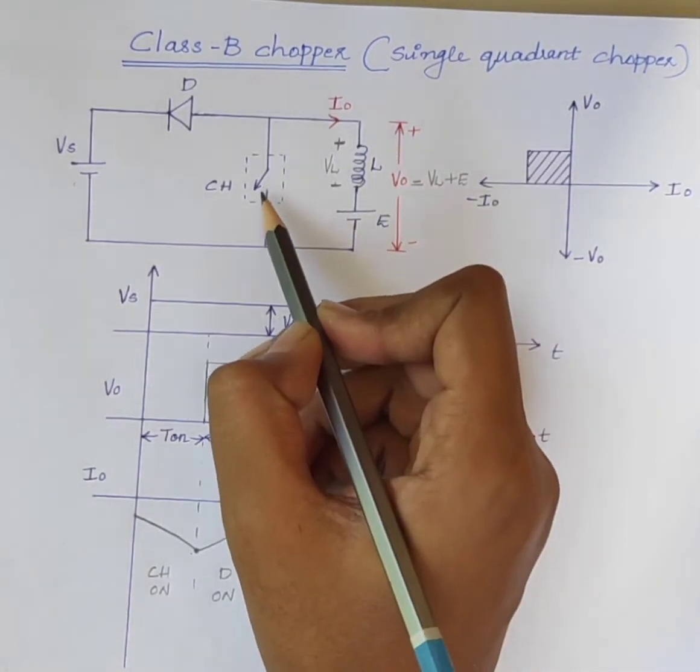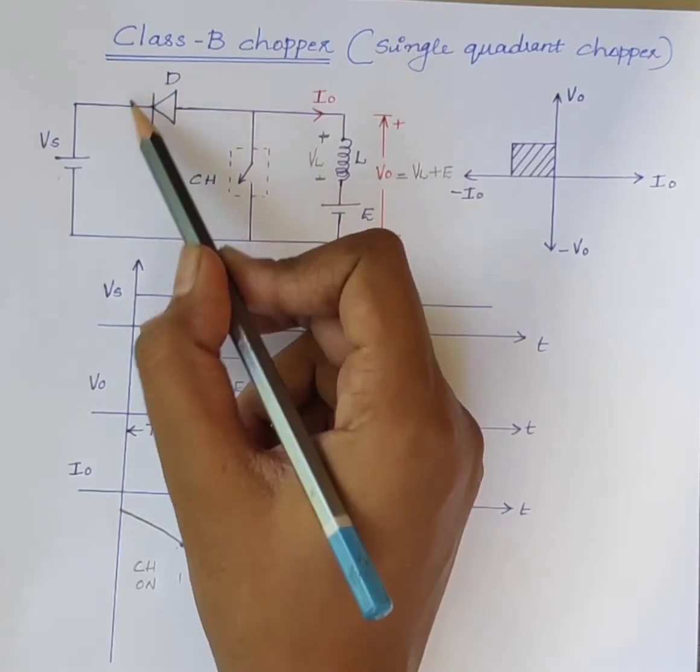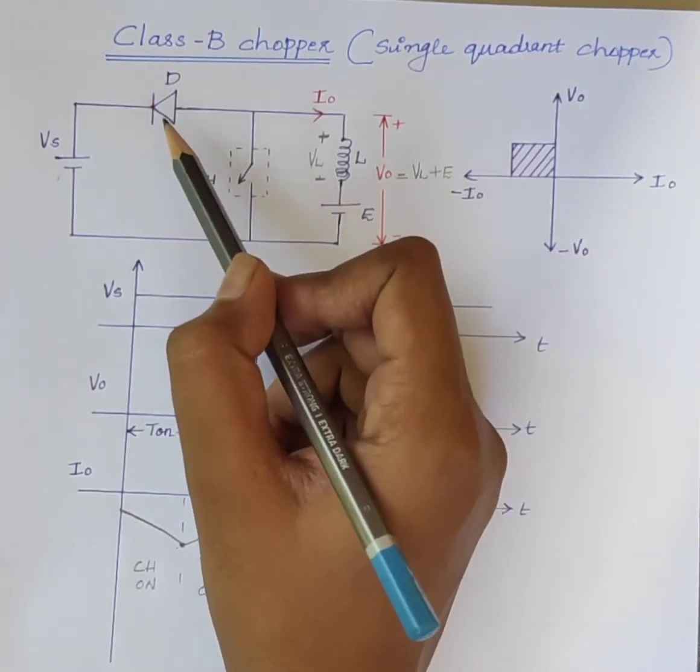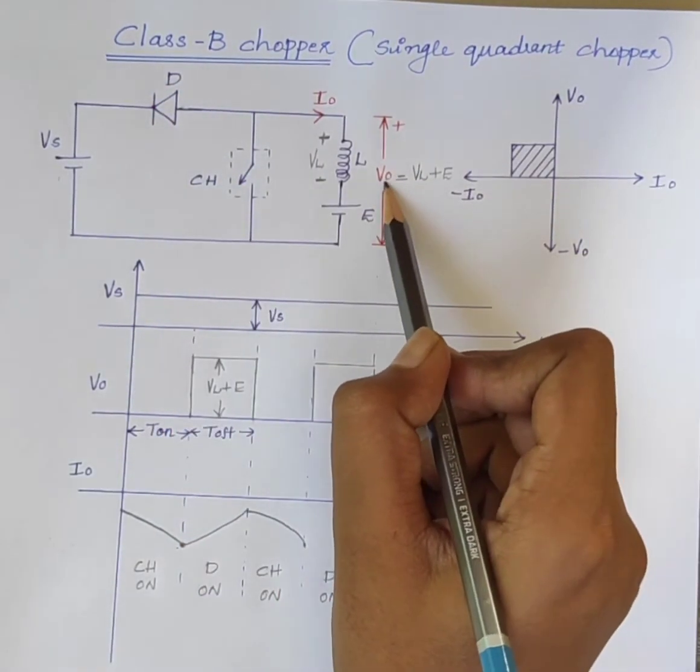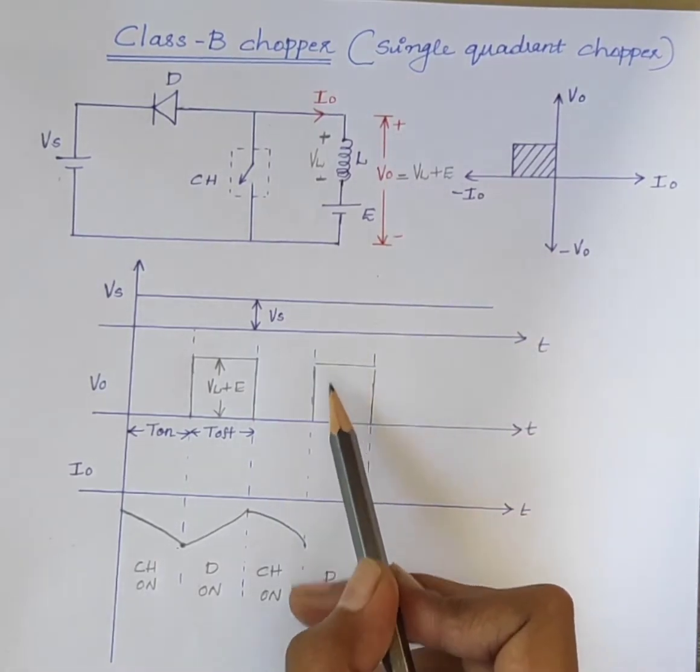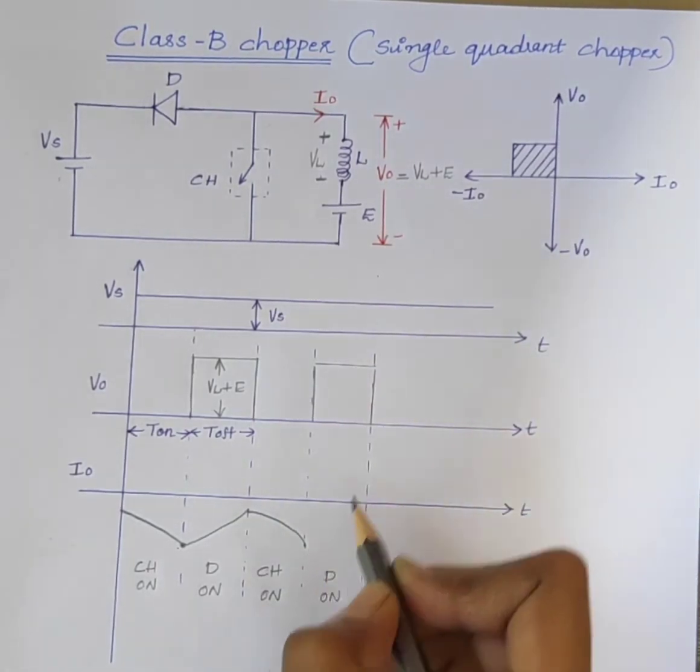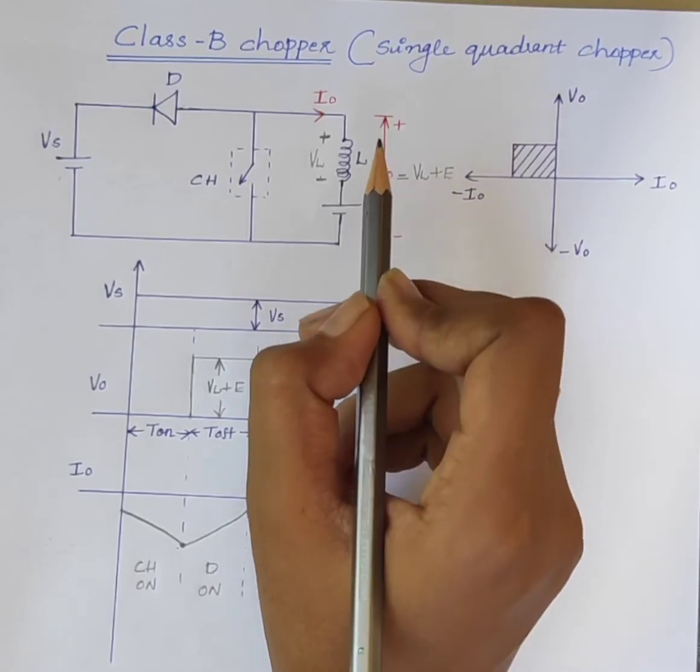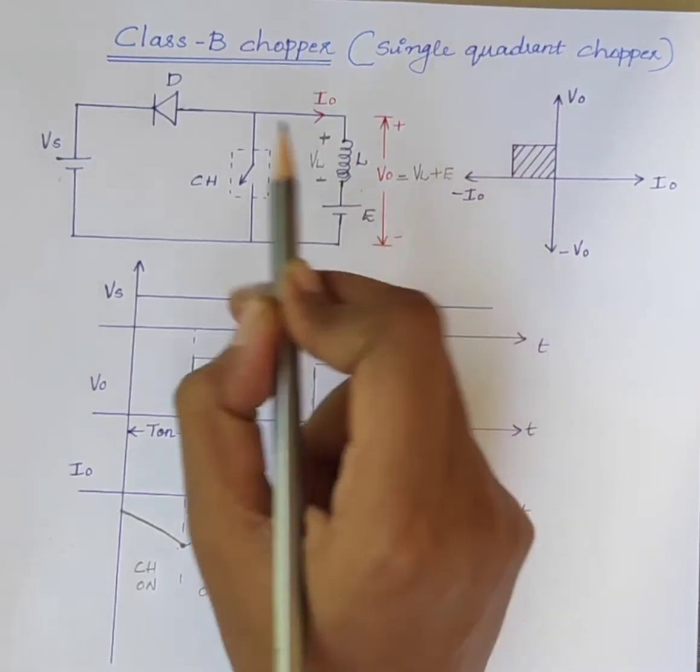When the chopper is in the off state, the diode D becomes forward biased and the output voltage V0 is equal to VL plus E. And, the power flows from load to the source.